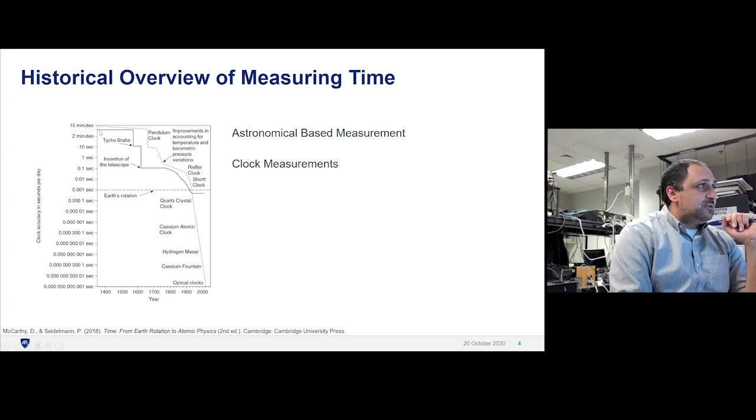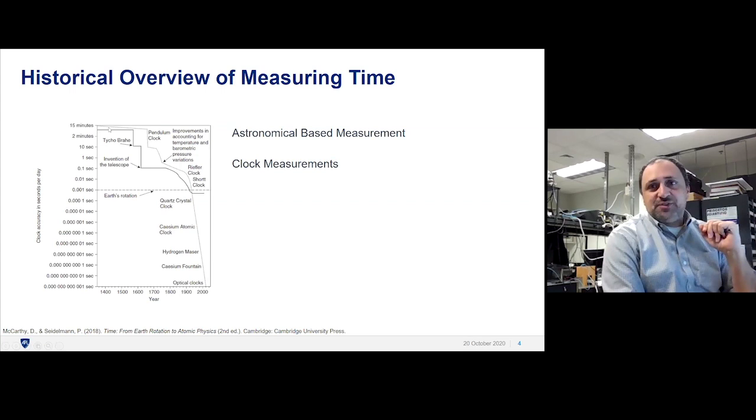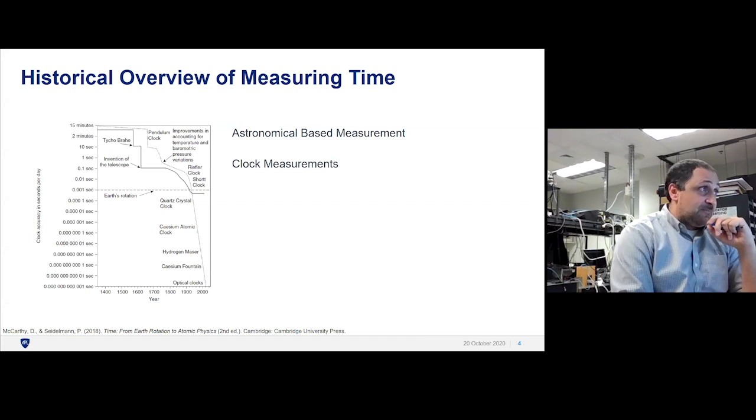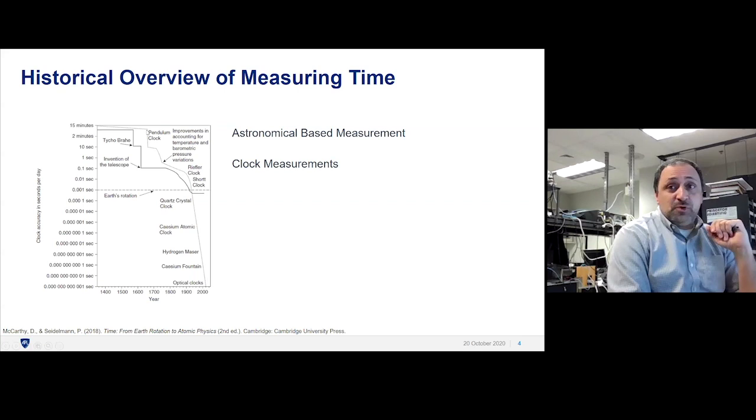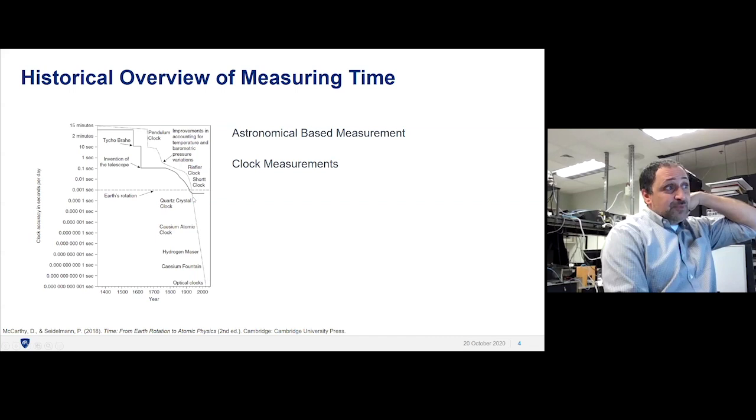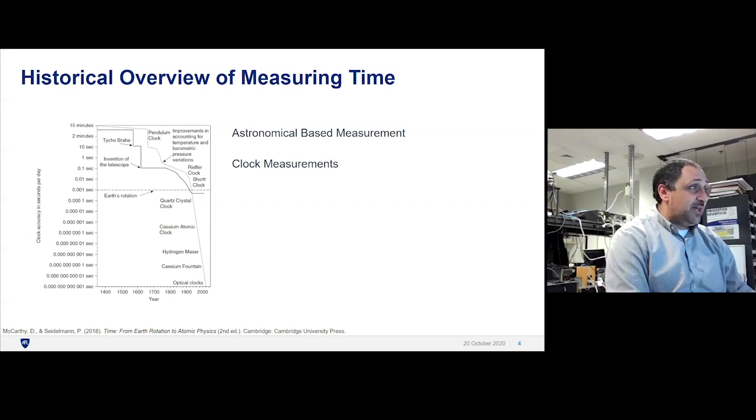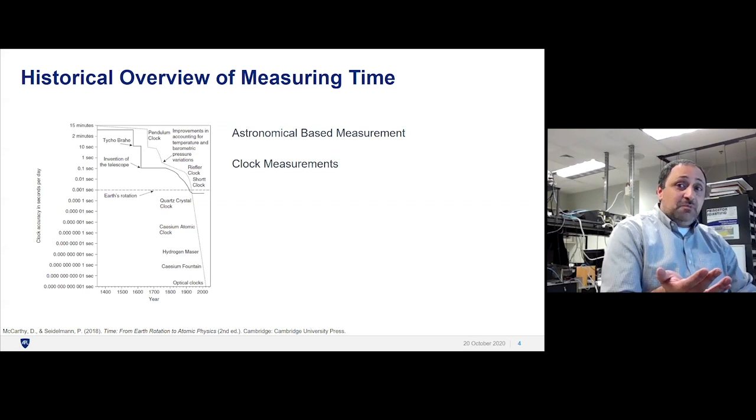There are two lines. The dark line indicates the accuracy using astronomical measurements, motion of stars and planets. You can see how it improved but flattened out last century. The dotted line is our ability with clocks to keep time. For centuries, it was rather poor compared to astronomical techniques. But that changed once we got the quartz crystal oscillator. Now we've exceeded by many orders of magnitude previous techniques through the use of atomic clocks. That's enabled things like the internet and GPS.